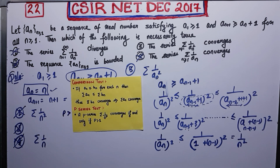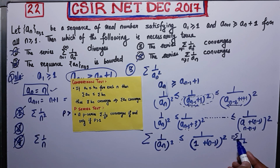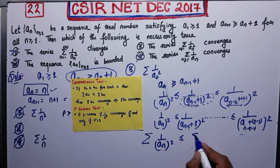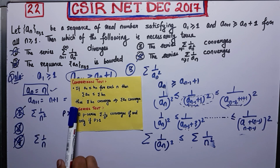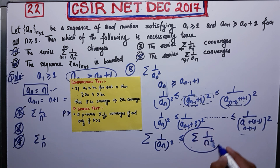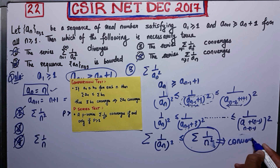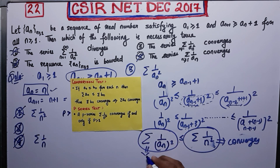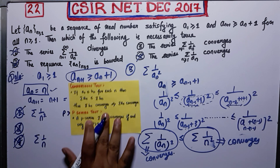Now apply the comparison test: if a_n ≤ b_n then summation a_n ≤ summation b_n. So summation 1/a_n² ≤ summation 1/n². By the p-series test, summation 1/n² converges (p = 2 > 1). Therefore by the comparison test, summation 1/a_n² also converges. This completes the proof of why option 3 is correct.